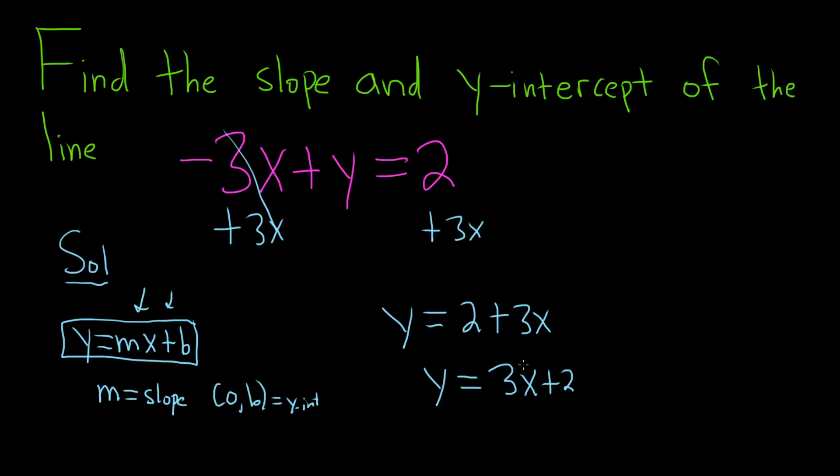So now we can easily identify our m. So in this case, the m is going to be equal to 3. So that's our slope. This is the slope.